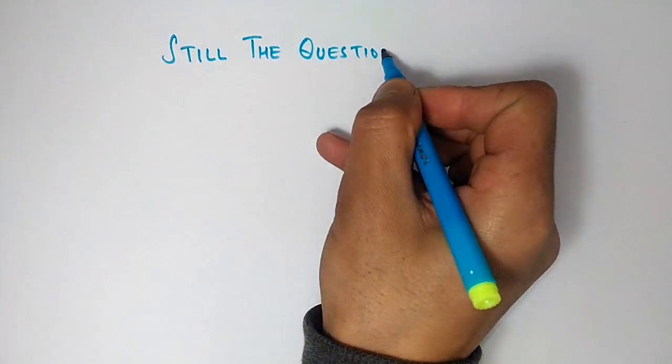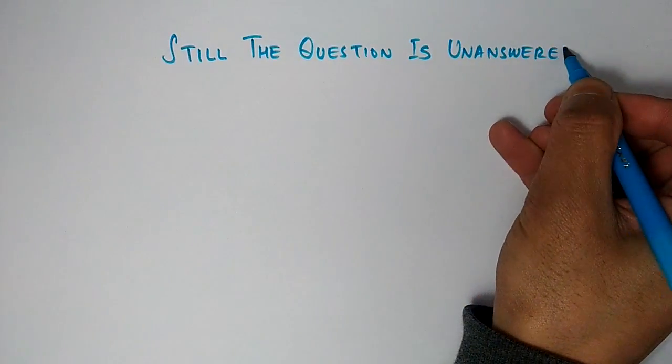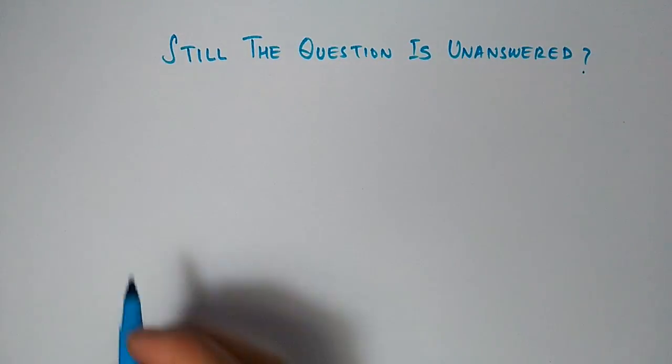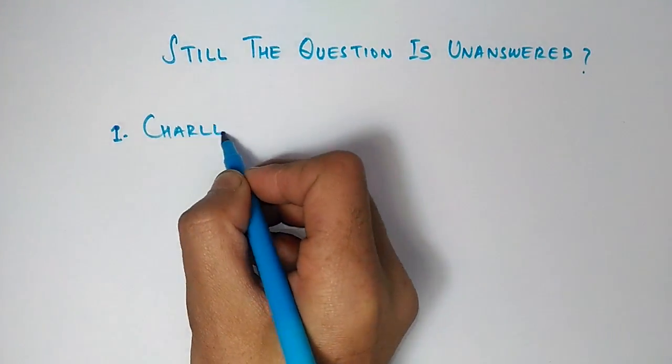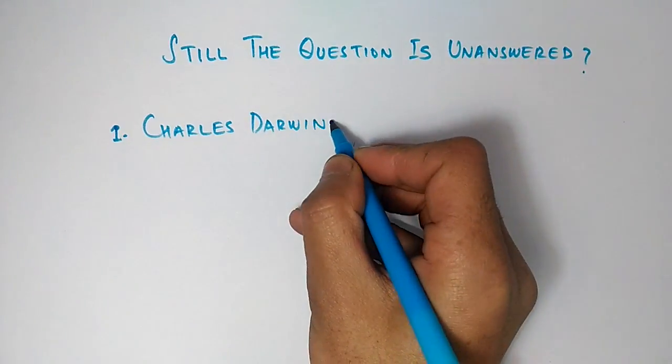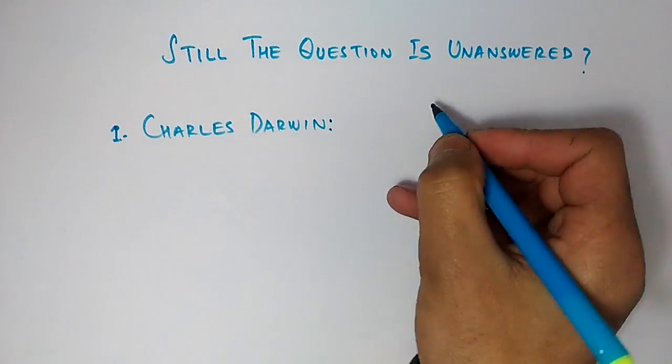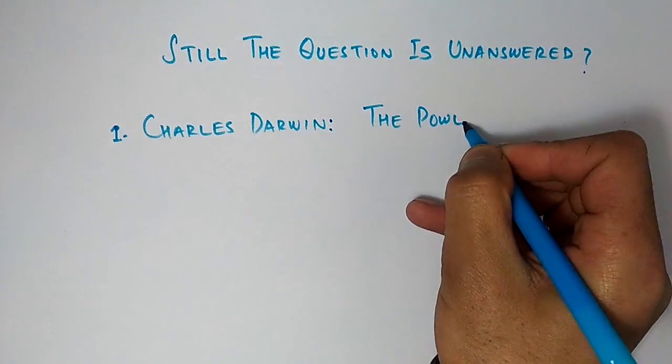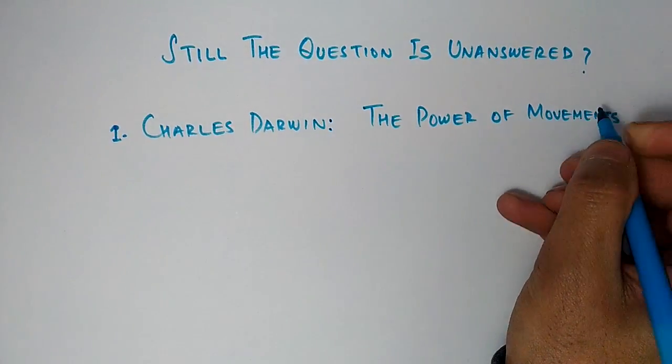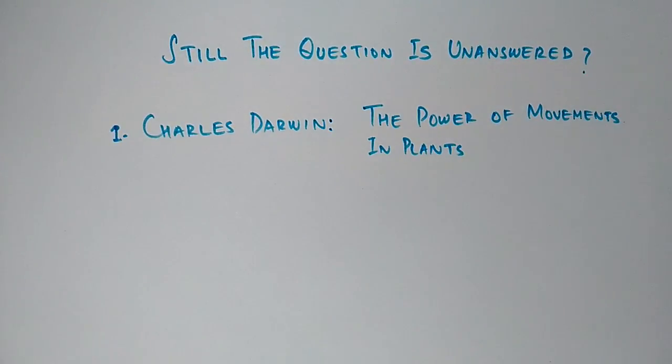Still the question is unanswered: do plants feel? Let's get back to the history. First, Charles Darwin pops up here. He was the first scientist who discovered the movement in plants and wrote it in a book, namely The Power of Movement in Plants. He discussed every type of movement in plants, mostly phototropisms.